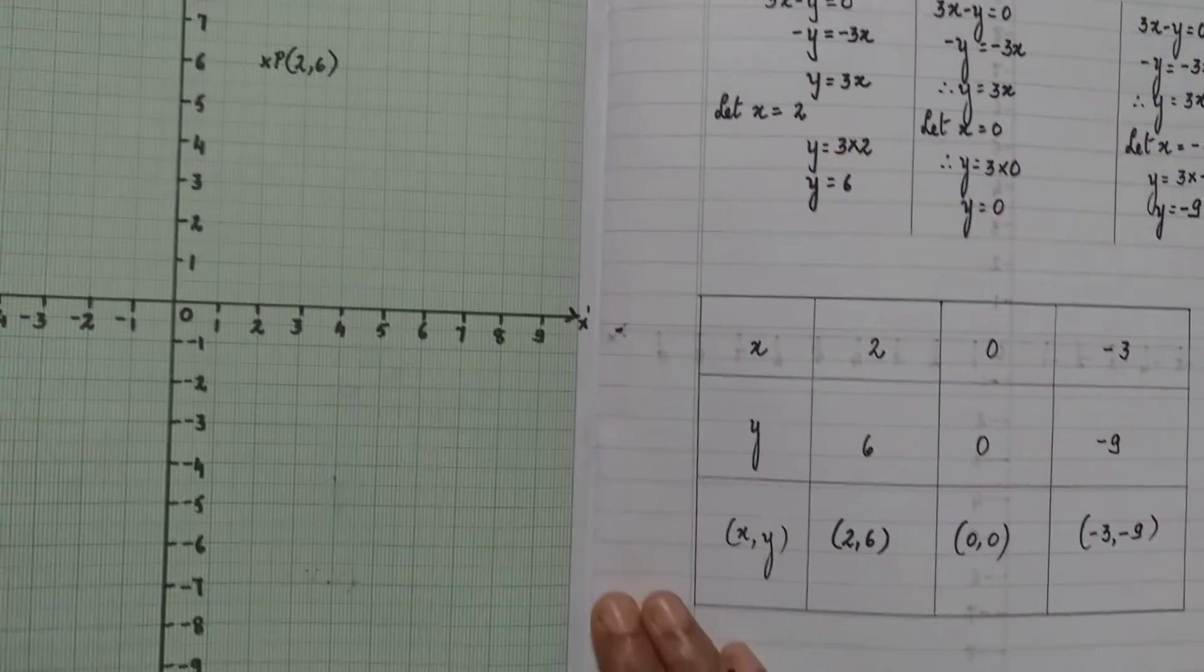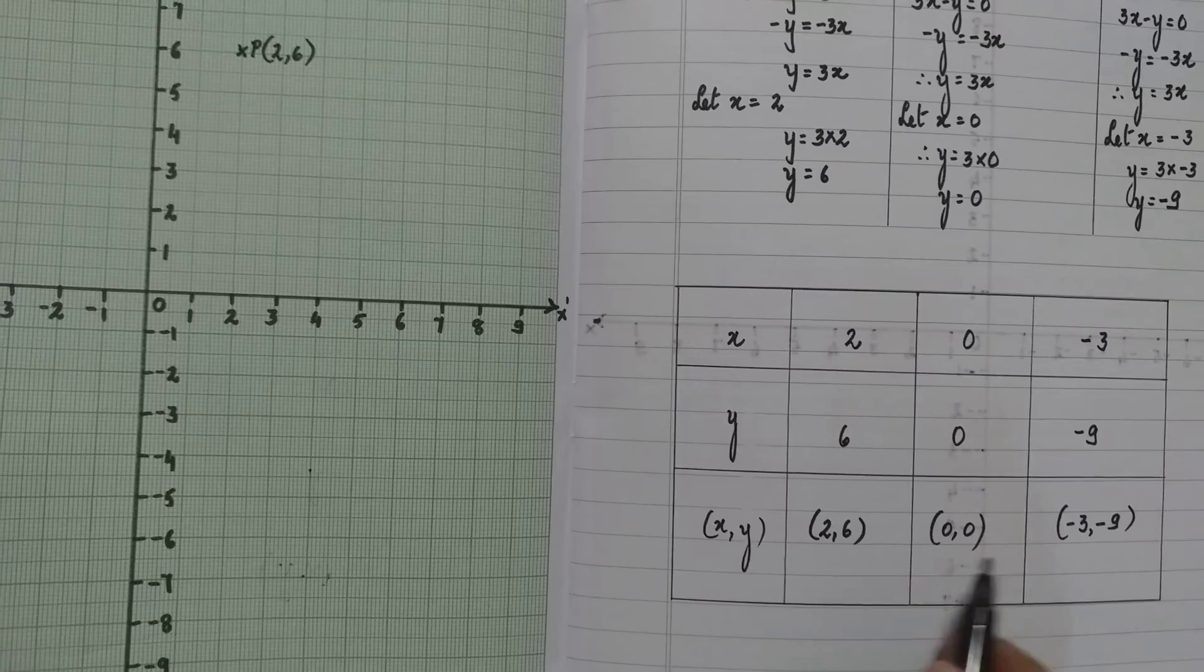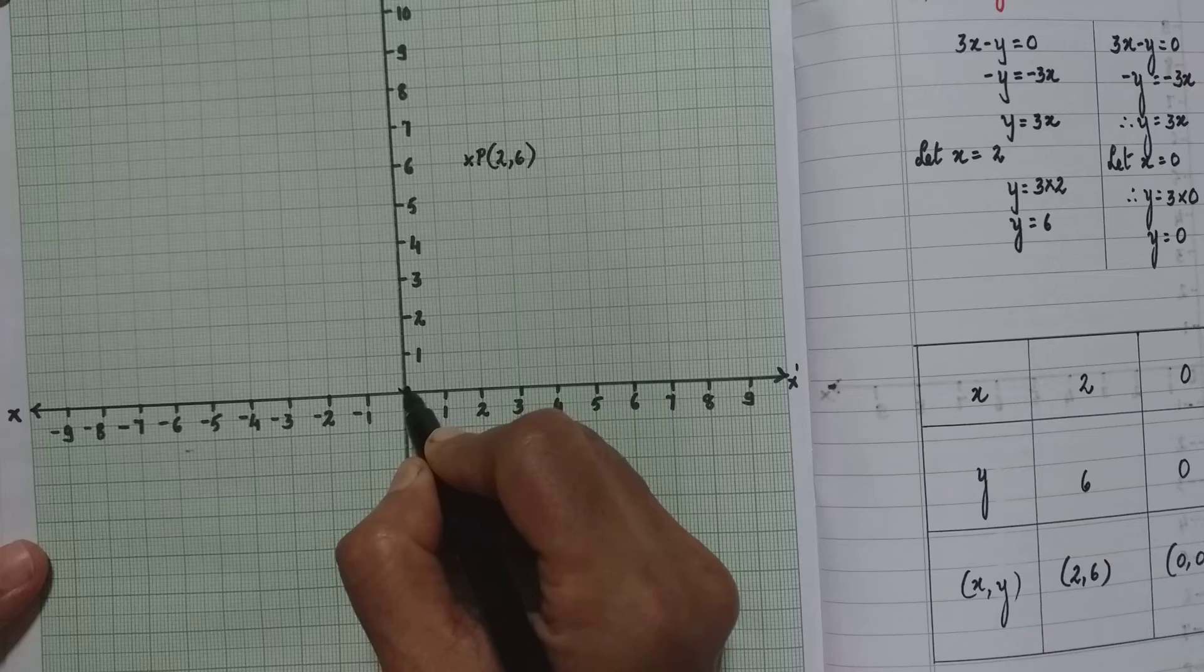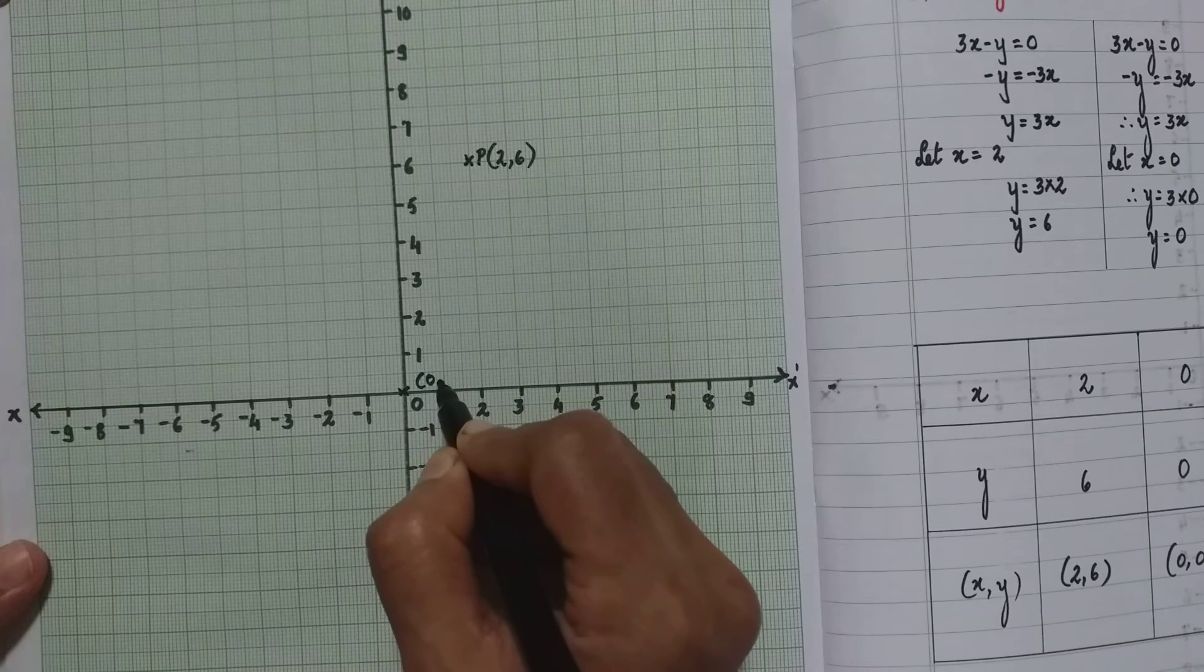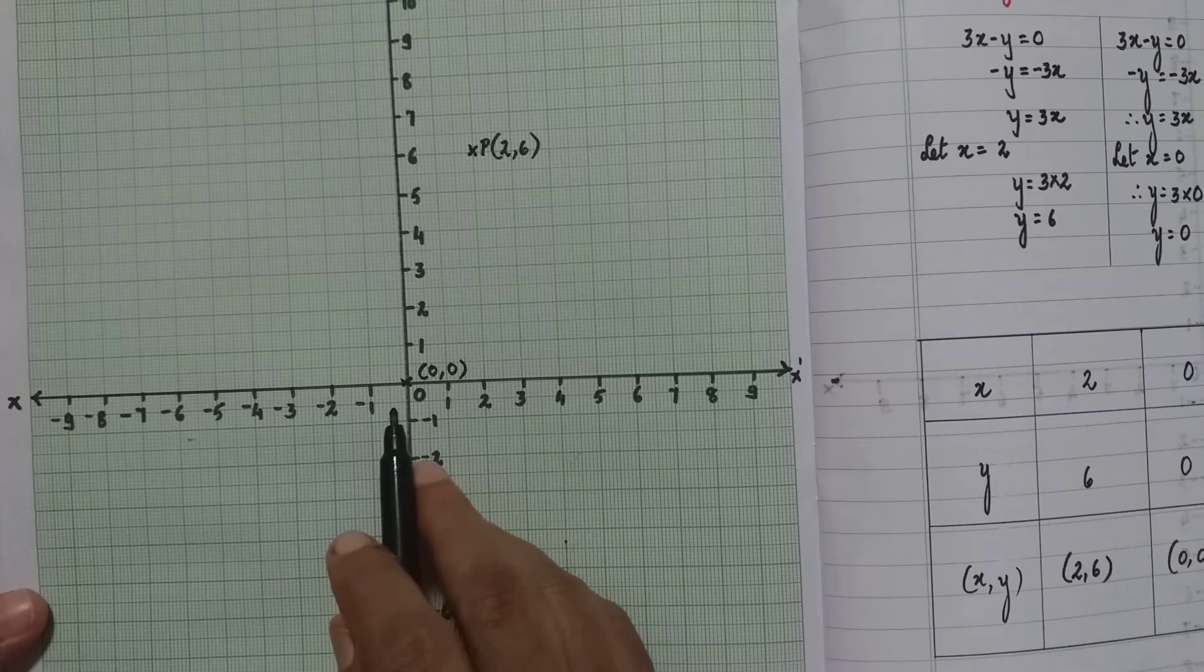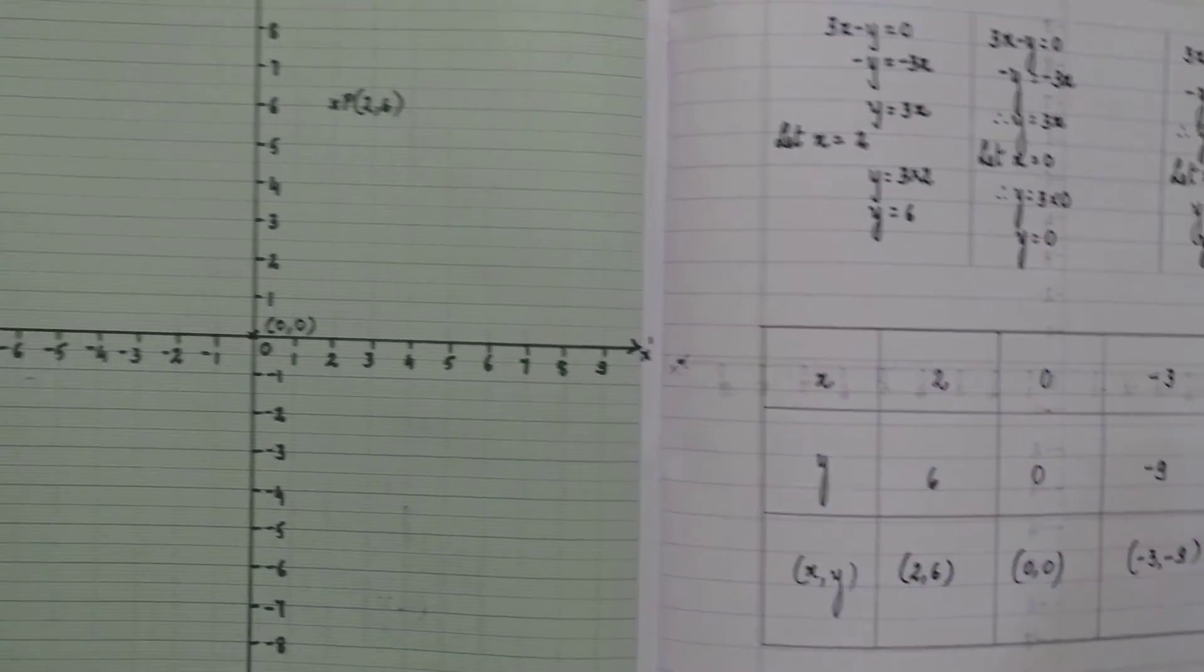What was the second pair of coordinates? 0, 0. That is O itself, the origin. So we will just mark it here and write 0, 0. These are the coordinates of the origin. Origin coordinates are 0, 0.